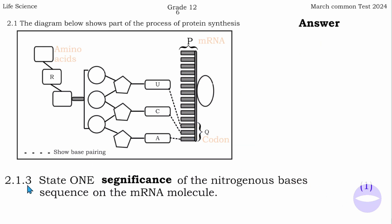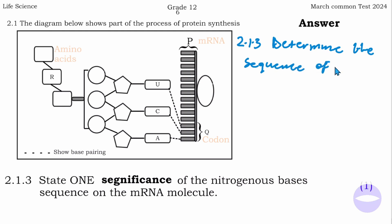Question 2.1.3 says: state one significance of the nitrogenous base sequence on the mRNA molecule. The nitrogenous bases of the mRNA molecule copy the information from the DNA so that a protein will be synthesized. DNA does not leave the nucleus — only mRNA moves out of the nucleus to the cytoplasm. So the function of the nitrogenous base sequence of mRNA is to determine the sequence of amino acids that form proteins.